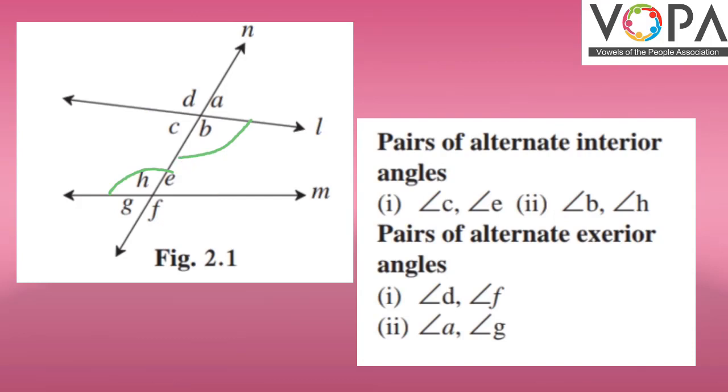Then pairs of alternate exterior angles will be angle D and angle F. And the second pair will be angle A and angle G.